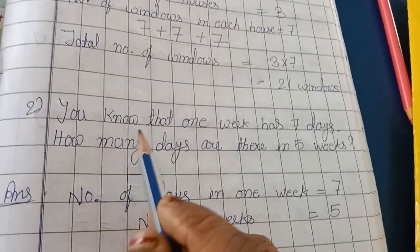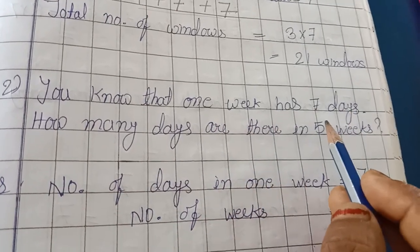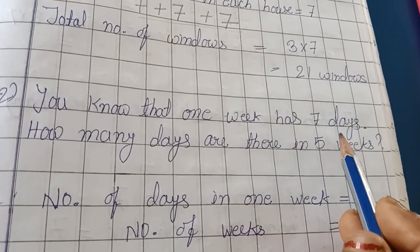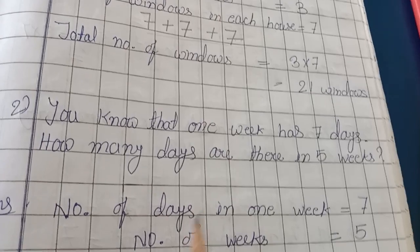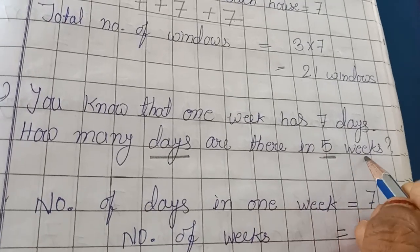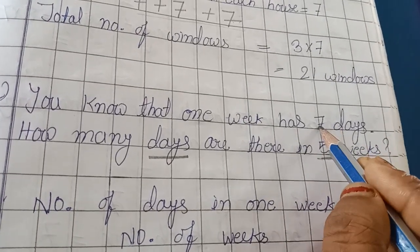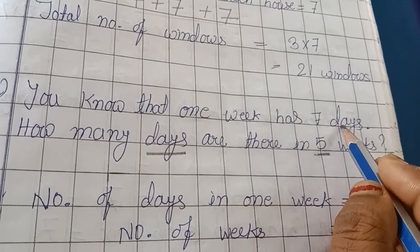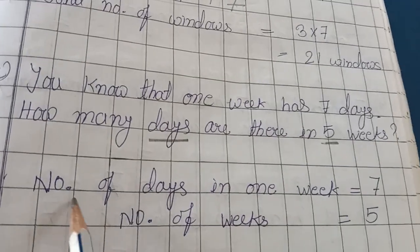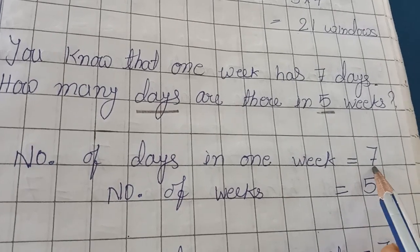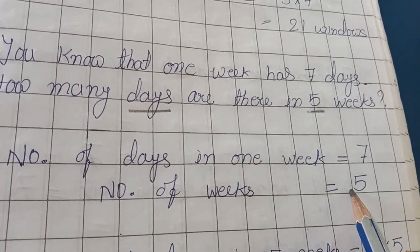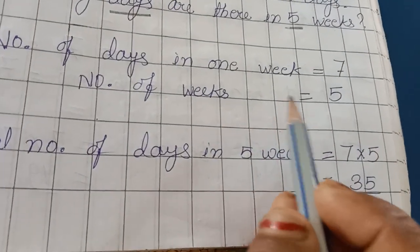Now the second question. You know that one week has seven days. So how many days are there in five weeks? This seven indicates the number of days in one week, and this five indicates the total number of weeks. So our statement will be: number of days in one week = 7, and number of weeks = 5.